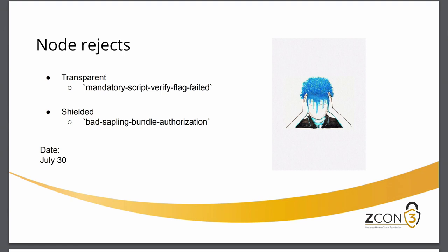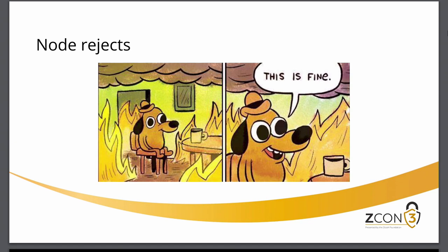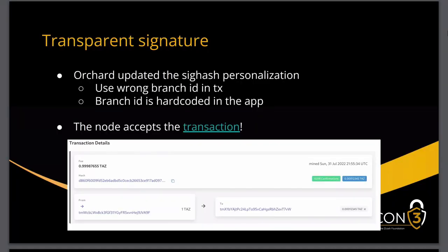We had two errors I couldn't find a clear explanation for online. We investigated how the transparent signatures were working and found that ZIP 244 — which rolled out the Orchard upgrade — slightly changed the SIG hash used for transaction signatures. The personalization was slightly changed, and the branch ID was updated to Orchard. We had the previous one, so we needed to update to the right one.